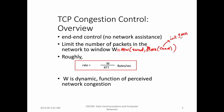The maximum segment size depends on the maximum transmission unit size. Using this window variable, a sender can roughly calculate its sending rate. The sending rate equals the window — which is the minimum of the receive window or the congestion window — divided by the RTT (round trip time), giving the number of bytes per second the sender can transmit.